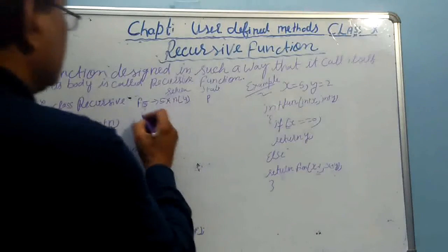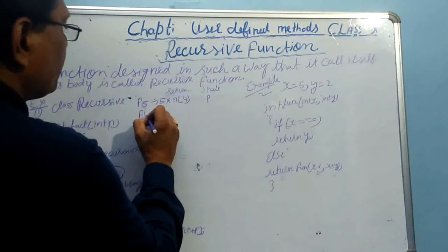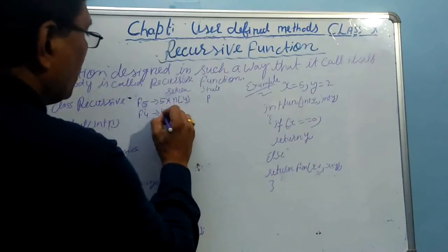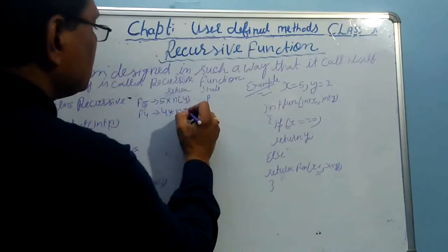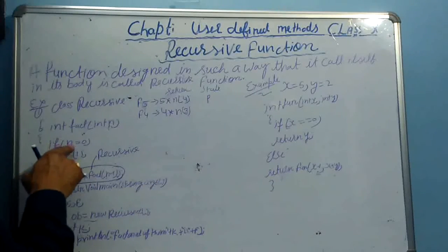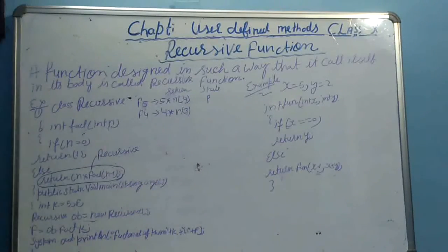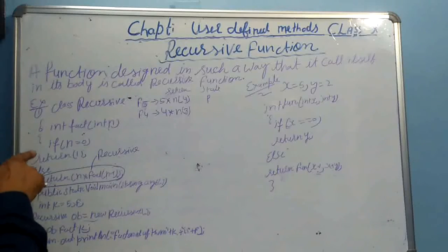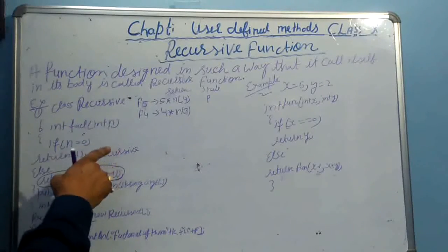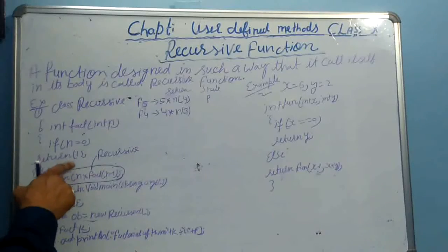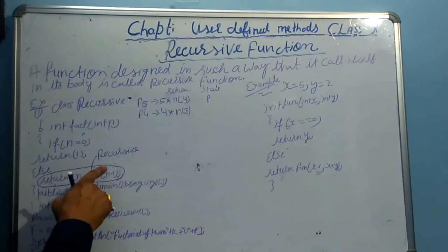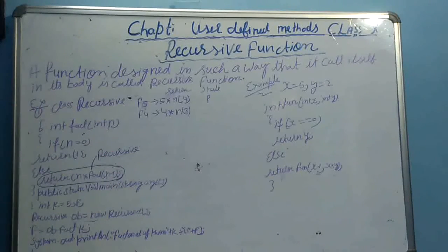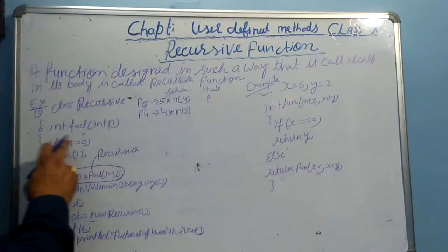Then after that, the value will be 5 calling fact(4). Then 4 multiplied by fact(3), because n is not 0 yet. It will check if the n value is 0. If the value of n is 0, it will return 1. Otherwise, return n multiplied by fact(n minus 1). The function keeps calling itself — when the value of n will be 0, then it will stop.